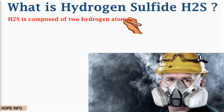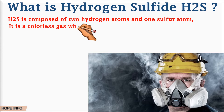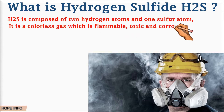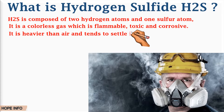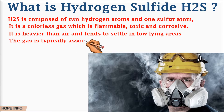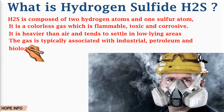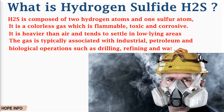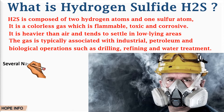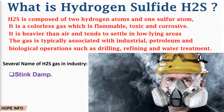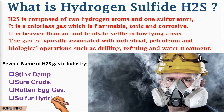What is hydrogen sulfide H2S? H2S is a composite of two hydrogen atoms and one sulfur atom. It is a colorless gas which is flammable, toxic, and corrosive. It is heavier than air and tends to settle in low areas. The gas is typically associated with industrial petroleum and biological operations such as drilling, refining, and water treatment. At low concentrations of 5 to 10 ppm, H2S is associated with a stench resembling rotten eggs. The gas is also known by various names in the industry, including sour gas, rotten eggs, and sulfur hydride.